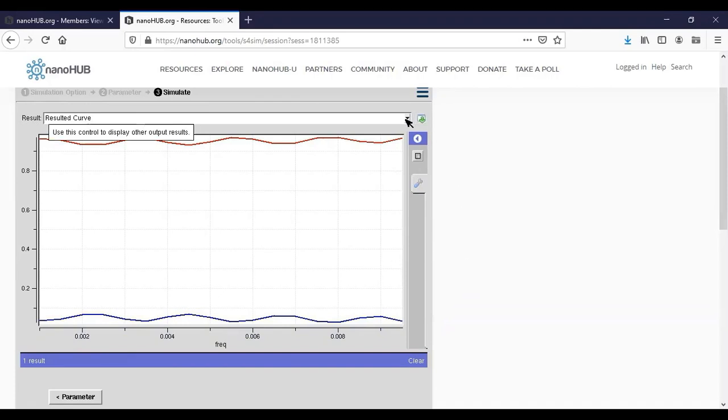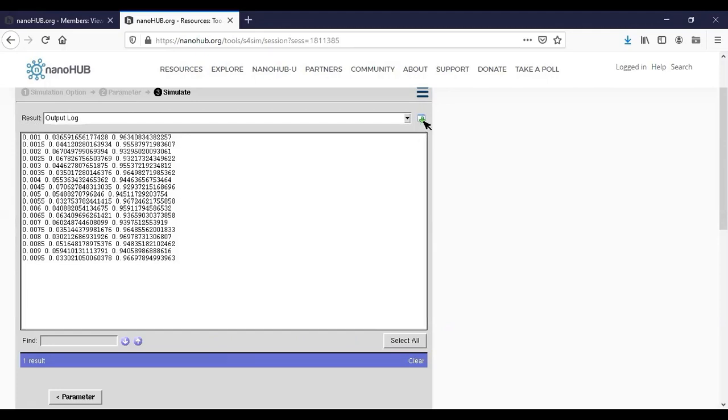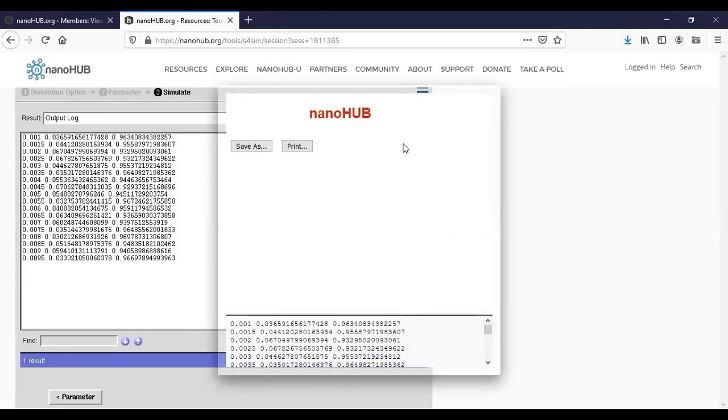We can go to the output log and download this file and put it into MATLAB, Origin, or whatever software you're comfortable with and do some post-processing.